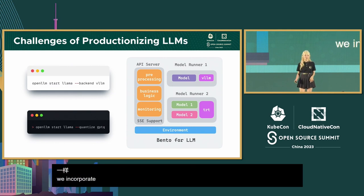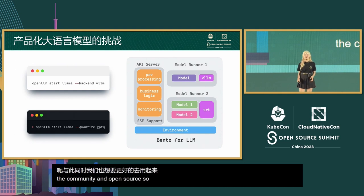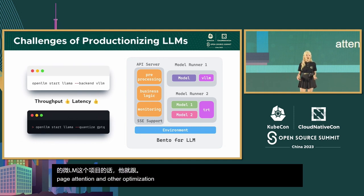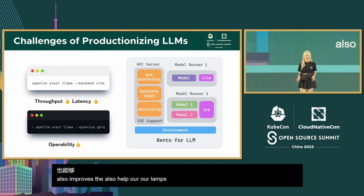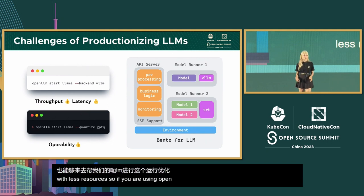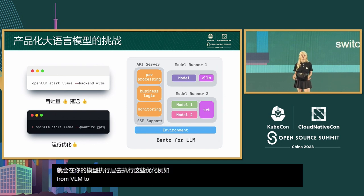A Bento for LLM is slightly different from a normal Bento. First, we incorporate SSE support in the API server so that the language model can respond more quickly. We also leverage the power of the community and open source — for example, vLLM is a project doing amazing work with paged attention and other optimizations to improve language model throughput and latency. Quantization techniques like GPTQ also help LLMs work with fewer resources.